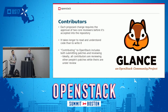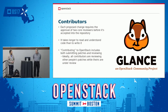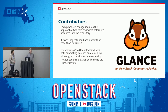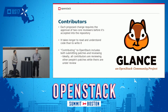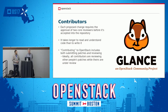Each proposed change requires two approvals by members of the core reviewer team before it's merged. It takes longer to read and understand code than it does to write it, so reviewing is an important part of OpenStack. In your capacity as operators or managers of development teams, it takes time not just for contributors to write code, but they need to be reviewing too. That's what makes the community go and contributes to code stability. It's important to allocate reviewing bandwidth as well as regular contributions.